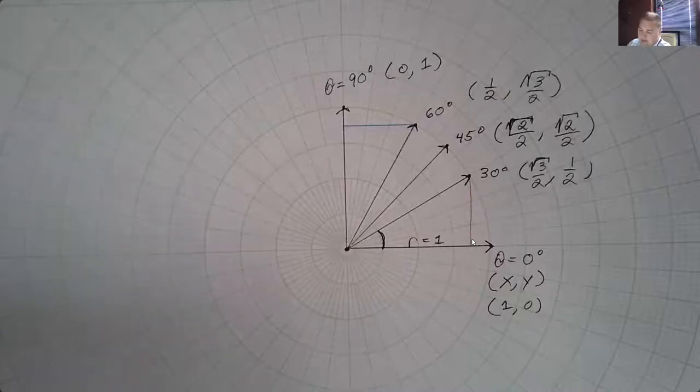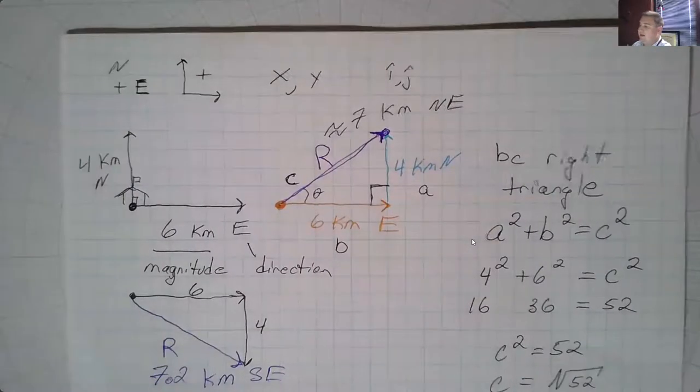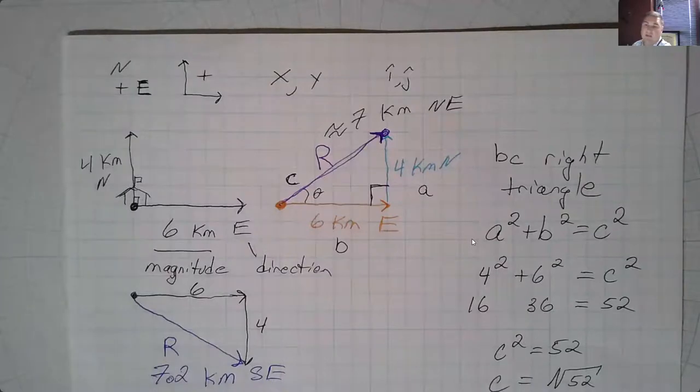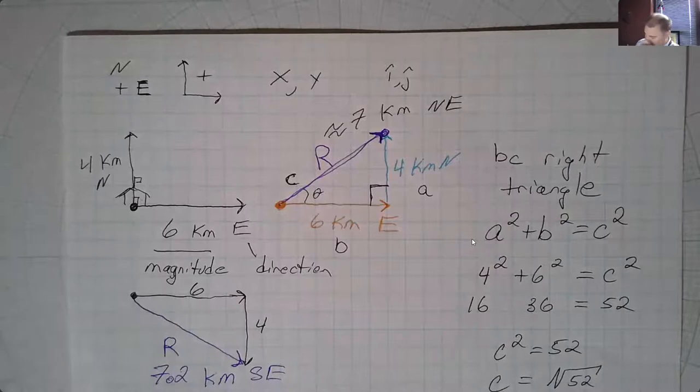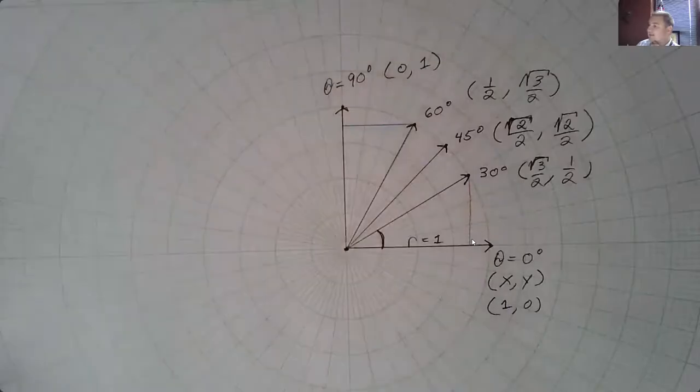So, neither direction really best describes it, but again, that kind of brings us back to thinking about it as 7 kilometers in a roughly northeasterly direction. Now, the other thing to point out here is that just because you have these identities for the unit circle doesn't mean you can't use these in other situations.